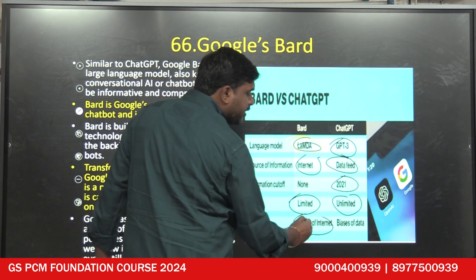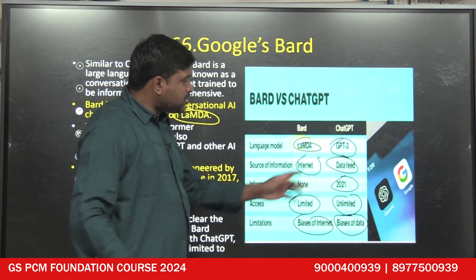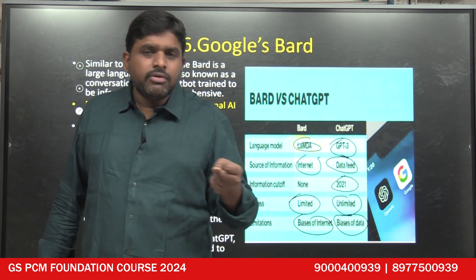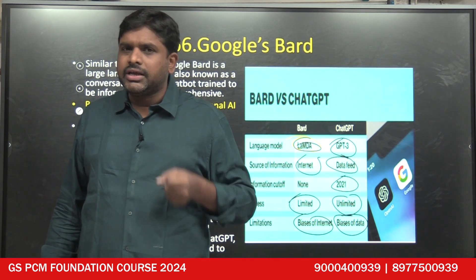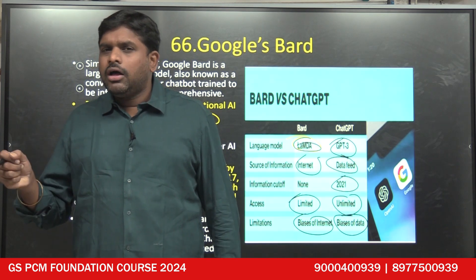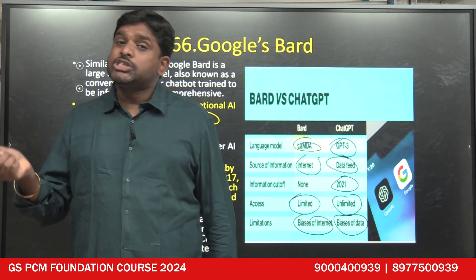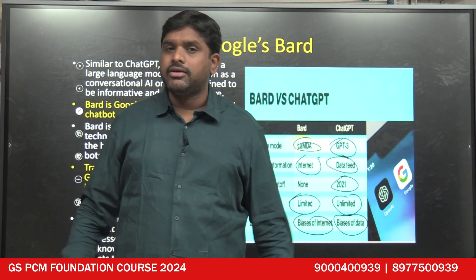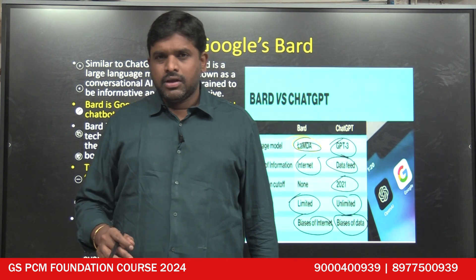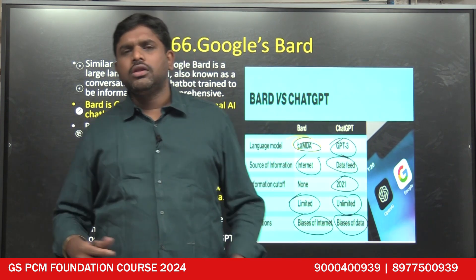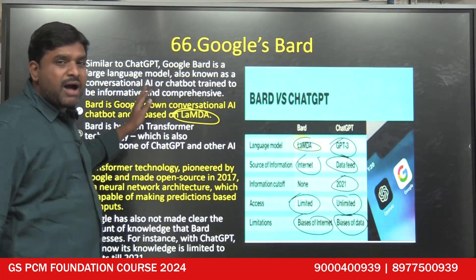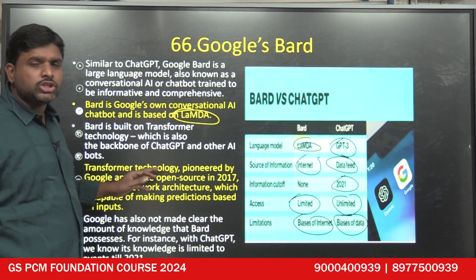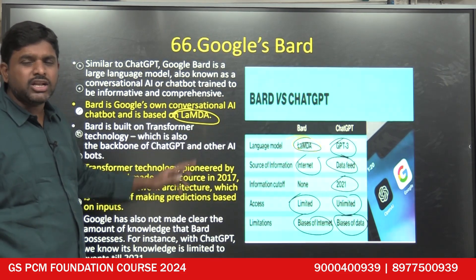In terms of limitations: ChatGPT has biases of data, because the data fed into it is fixed — answers come only from that stored dataset. Google Bard gets its information from the internet, so data is retrieved in real time. That is a major difference between ChatGPT and Google Bard. ChatGPT is from OpenAI and Bard is from Google. Bard is Google's own conversational AI based on the platform called LaMDA — the language model used is LaMDA.